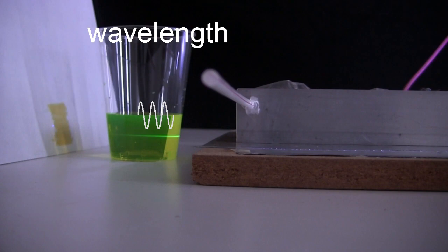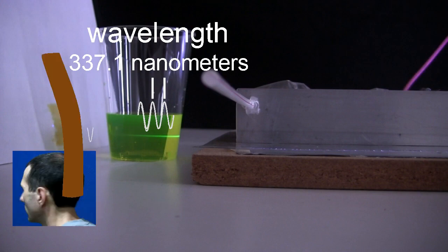The wavelength is the distance from one peak to the next. In the case of the tea laser, the wavelength is 337.1 nanometers, which is very small. You'd need around 300 of them to make up the diameter of a single human hair.